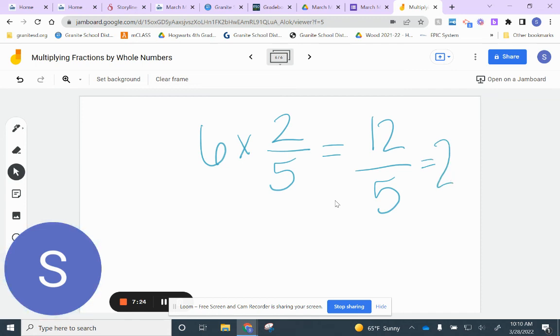So, that equals twelve-fifths, or two-and-two-fifths. Or, we could have solved it as twelve-fifths. Remember, you can leave it as an improper, or you can change it into a mixed number. It is your choice.